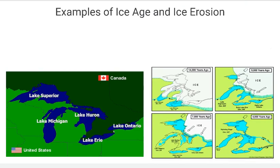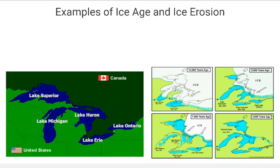I want to quickly talk about the Ice Age and some of this ice erosion. For those friends who live in the United States or in Canada, one thing we may talk about are the Great Lakes. There are five Great Lakes that have formed in the northern United States and the southern part of Canada through ice erosion. These five lakes are Lake Superior, Lake Michigan, Lake Huron, Lake Erie, and Lake Ontario.